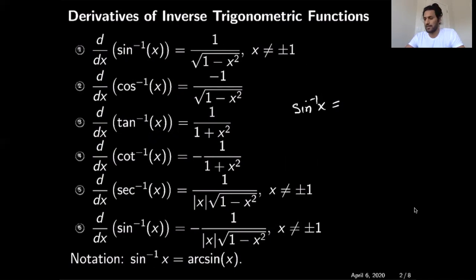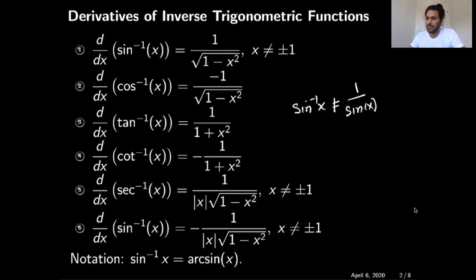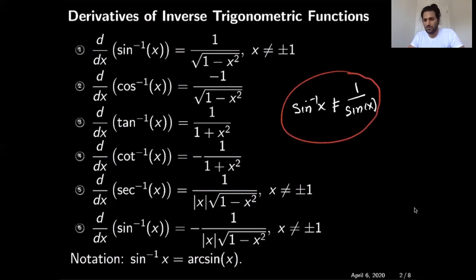For example, sin inverse of x is not equal to 1 over sin of x. Inverse trigonometric functions are functions themselves. It's not the quotient of one and sin of x, so you cannot use the quotient rule to calculate the derivative of this function. This is one reason we also have a different notation for the sin inverse function, which is the arc sin of x. Sometimes people will use arc sin of x instead of writing the minus one on top.